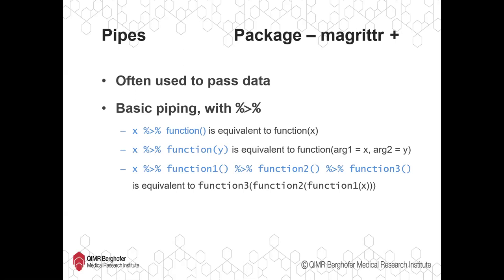If your object that is being passed through isn't the first argument of the function, you can specify where the object is meant to go using argument names and the dot notation — you can check out the booklet for that. You can also just keep piping output from one function to the next: x pipe to function one, pipe to function two, pipe to function three is equivalent to nesting function one within function two within function three, which makes it much easier to read and understand what is happening.